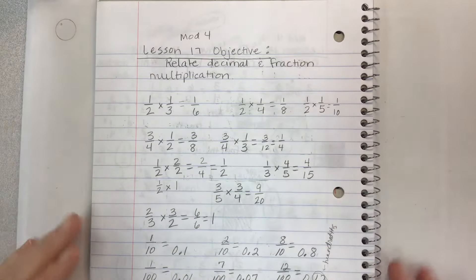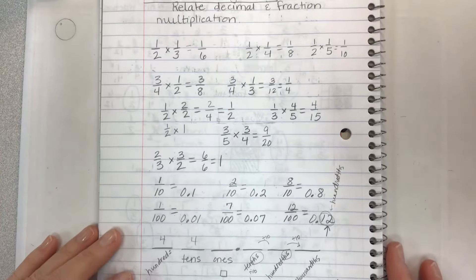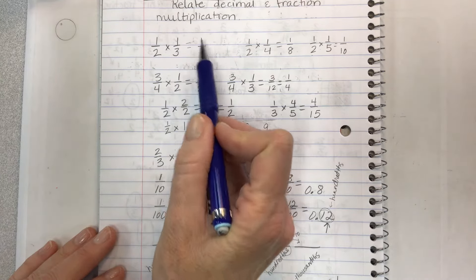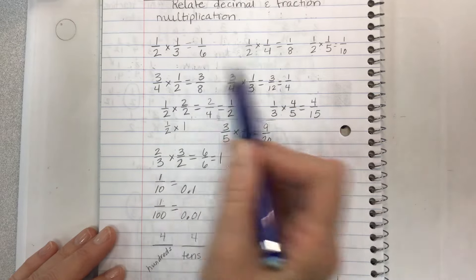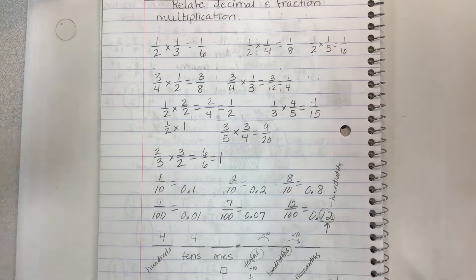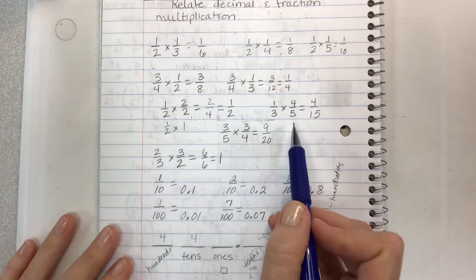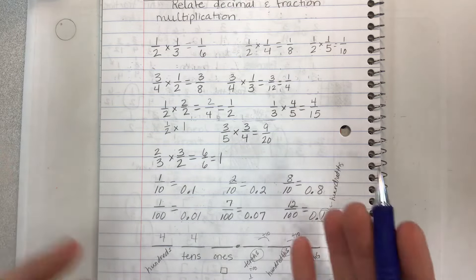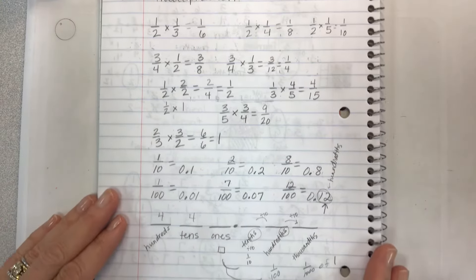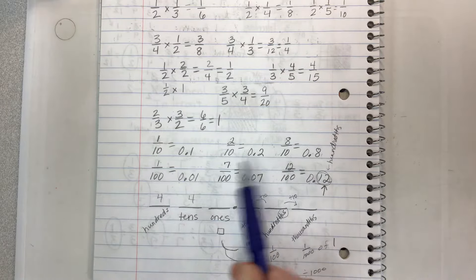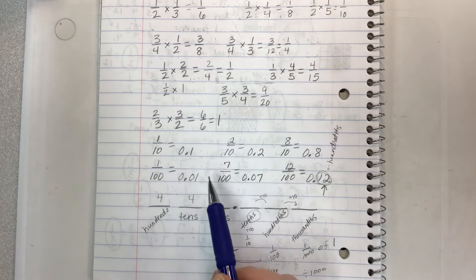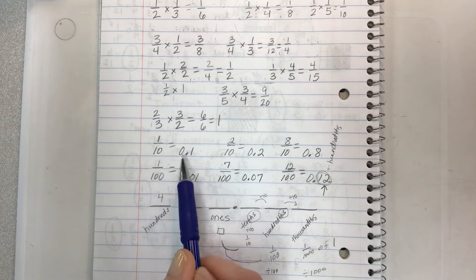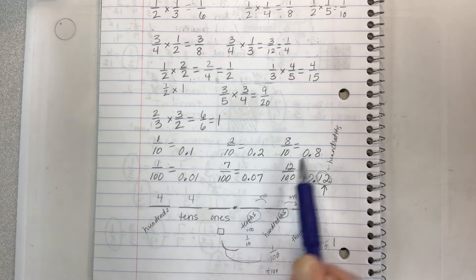If you have a minute, pause the video and write these things down to remind yourself how fraction multiplication goes. With unit fractions, you multiply across the top and multiply across the bottom — one times one is one, two times three is six. We start to notice that certain denominators are not tenths, hundredths, or thousandths. Today we're going to look for ways fractions and decimals are similar so we can multiply and go back and forth. One tenth as a fraction looks like 1/10, and as a decimal like 0.1; two tenths is 2/10 and 0.2; eight tenths is 8/10 and 0.8.